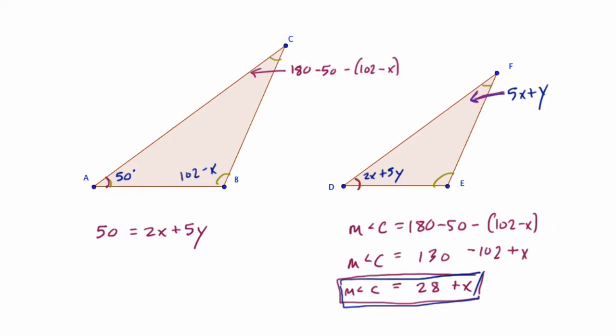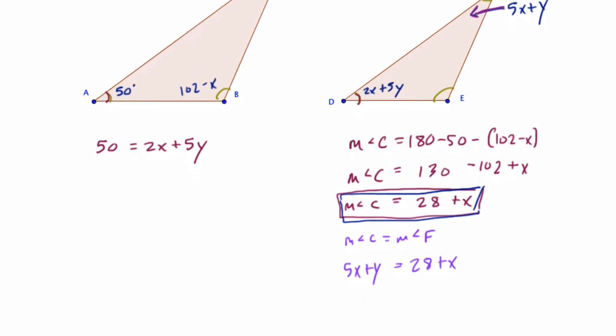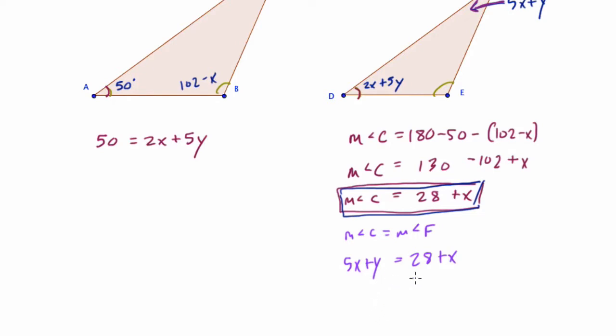All right. The measure of angle C is 28 plus x. So we can use this now to solve the system. We have everything we need because the measurement of angle F equals the measurement of angle C. These two things are equal. So I could just say that F equals 28 plus x. But they tell us that F equals 5x plus y. That's angle F. And that has to equal angle C, which is 28 plus x. And here, we're going to get both variables to the left side by subtracting x. And we have 4x plus y equals 28.